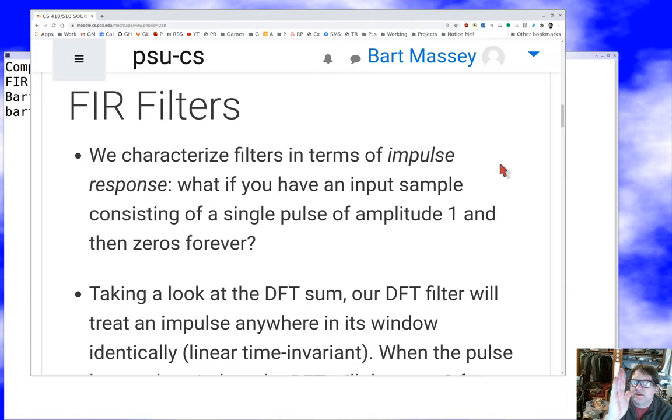I keep saying finite impulse response filter, what does that even mean? Well, an impulse is just a sample that has maximum amplitude for exactly one sample. A signal that has maximum amplitude for exactly one sample, and after that it's all zeros.